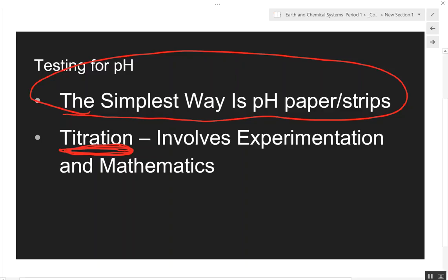Simplest way, pH paper. And if you have a swimming pool, you use pH paper all the time. You go and test your pool to make sure it's at the right pH level. Too low, you burn. Too high, it doesn't kill the germs.